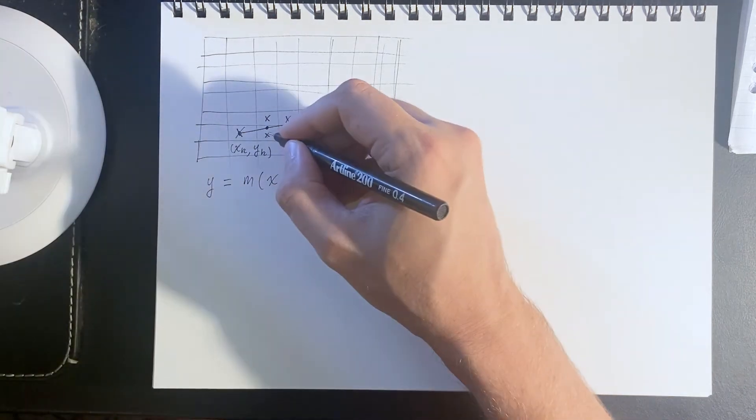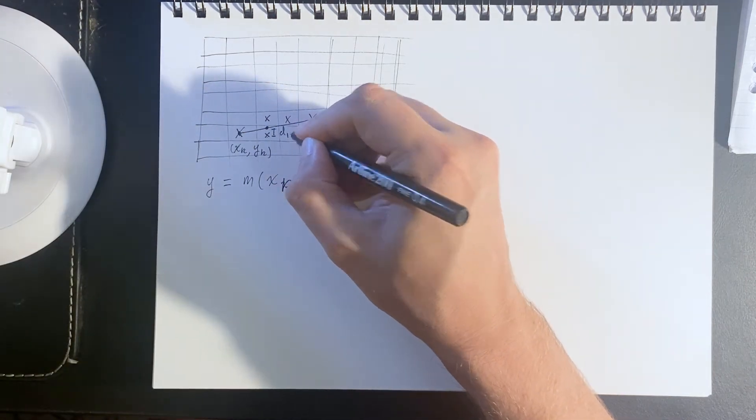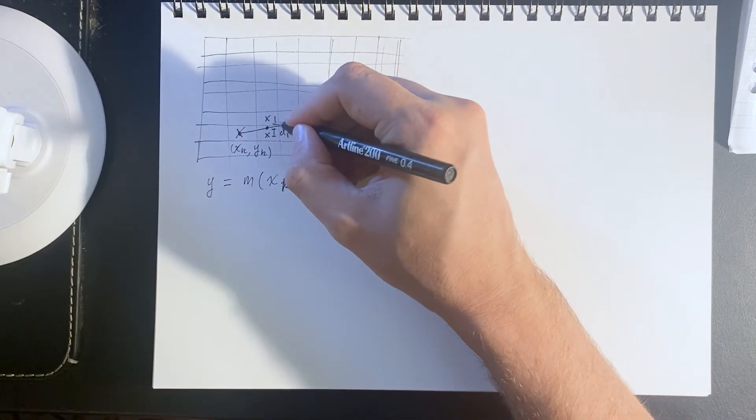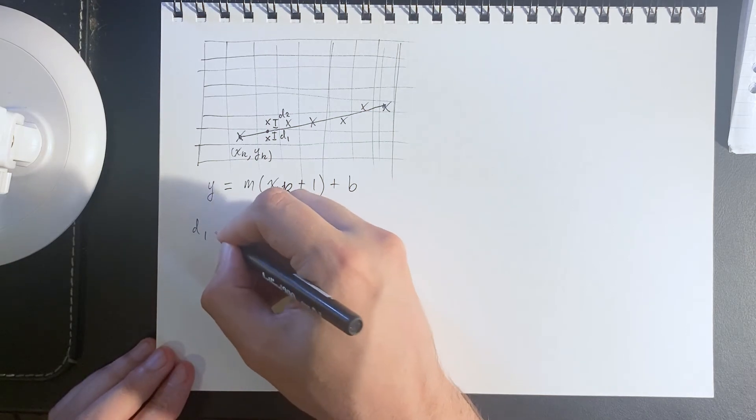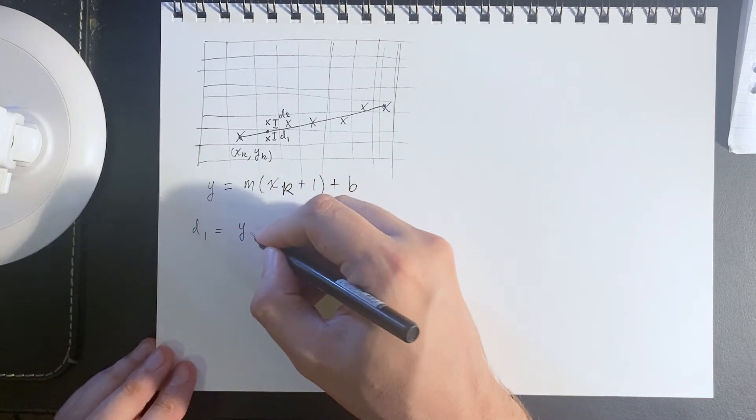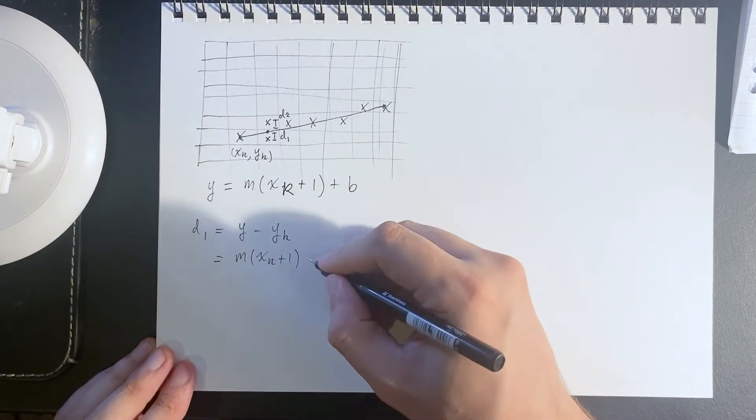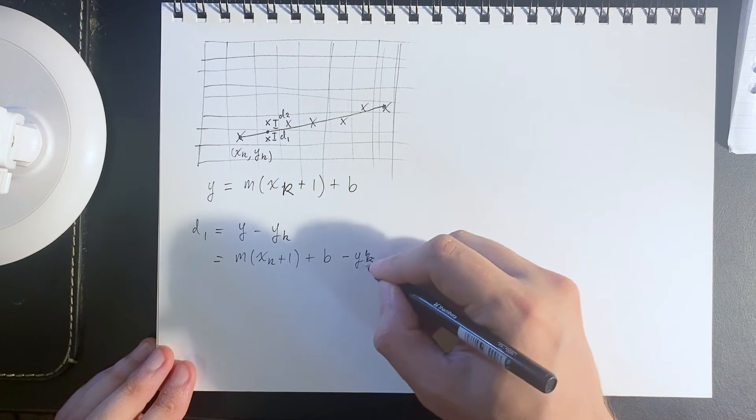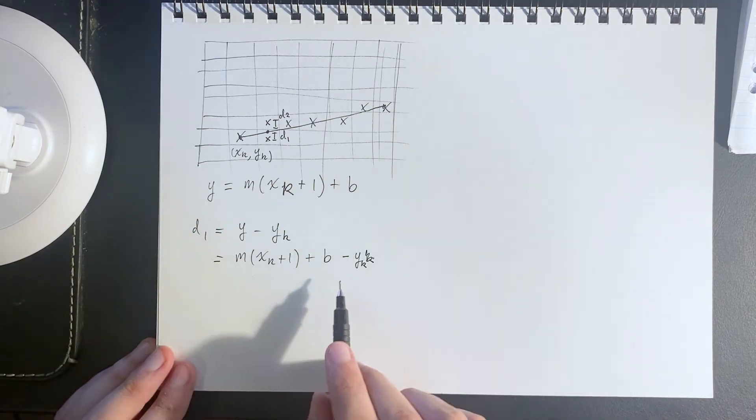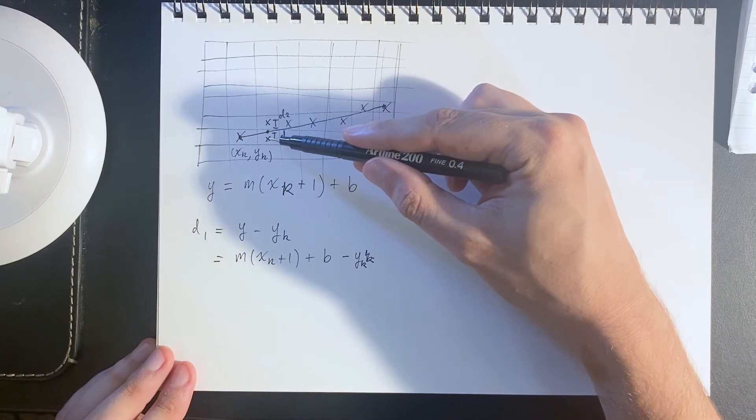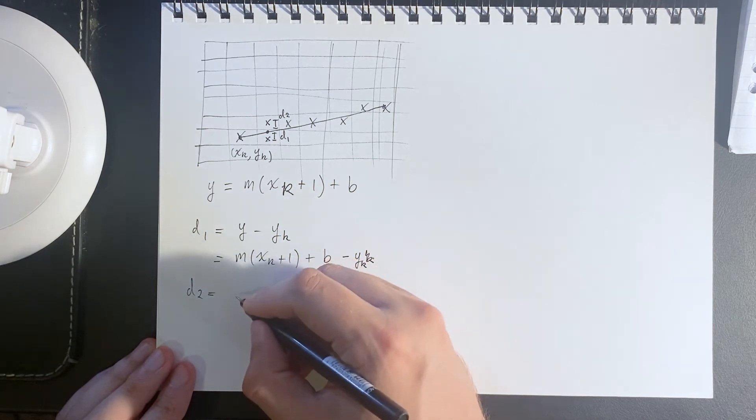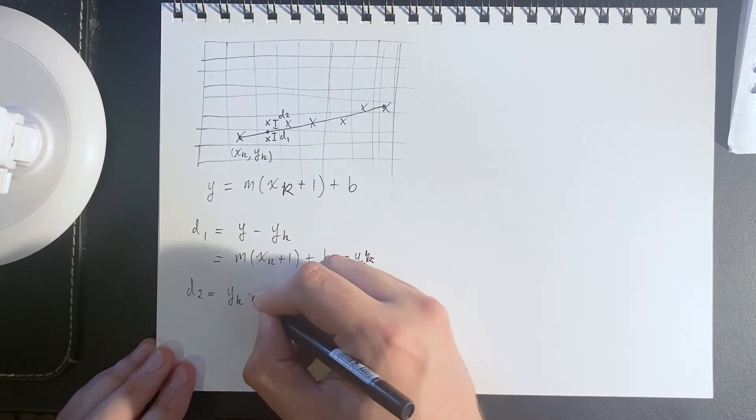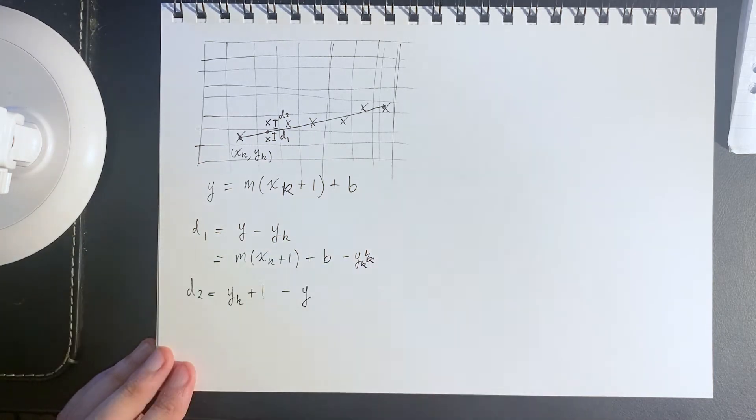There are two distances that we are concerned about: the distance not changing the y value and the distance changing the y value. Distance one is the upper point minus the lower point. Distance two will be the upper point, that's y_k plus one, minus the lower point.